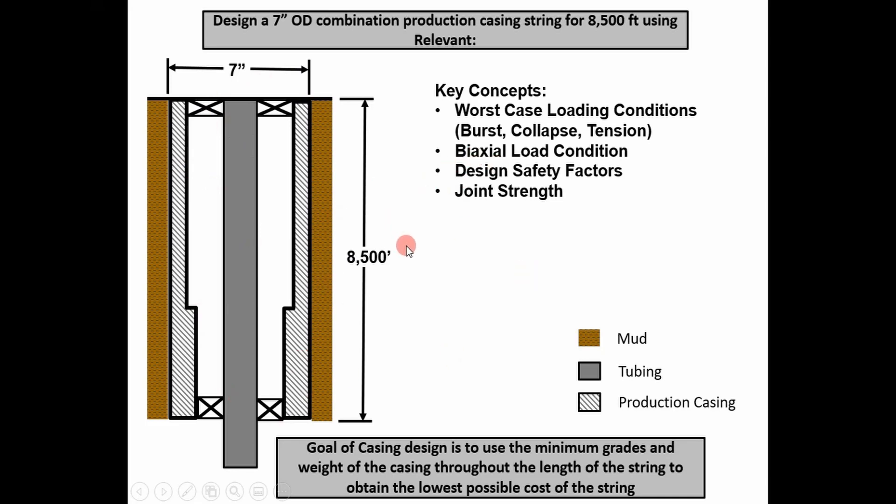Some key concepts to be aware of before we go into casing design: before you design anything, you've got to consider the worst case loading conditions. In this case it's going to be burst, collapse, and tension. We're also going to see biaxial load conditions. As design engineers, we have safety factors because we can't account for every variable — corrosion, fatigue life, those sort of things. Design safety factors help preserve our design. Another thing we're going to consider is joint strength.